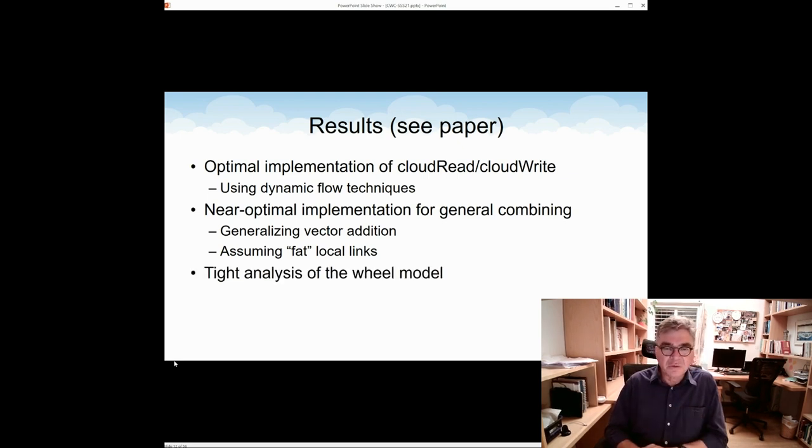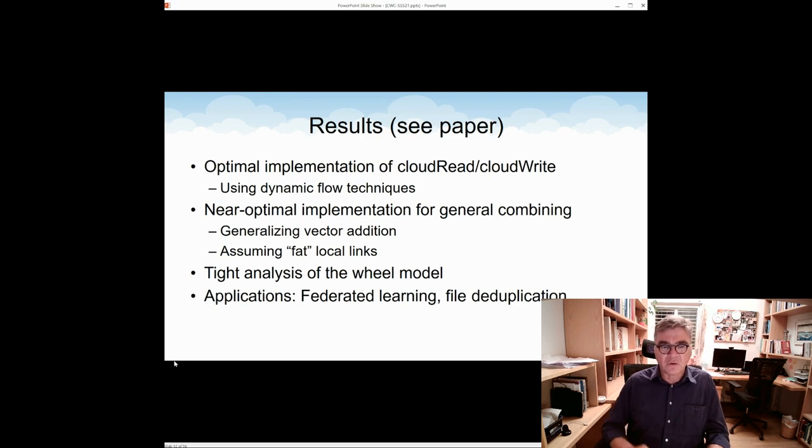On the other hand, we look at the case of a wheel model and we give tight analysis of its complexity for combining. Now, under general bandwidth assignment, for whatever bandwidth the links have, we know exactly how to do the combining in an optimal way up to a constant. So one result gives us combining in general topologies, but restricted bandwidths. And the other result gives optimal combining for a certain topology, but with arbitrary bandwidths. Finally, we give in the paper also a few applications, namely federated learning and file deduplication. Let me expand on that now.